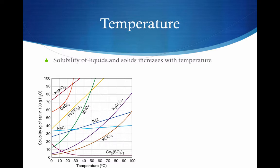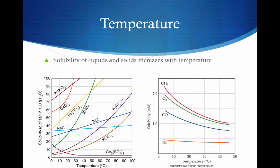Of course there are always some exceptions — you can find one on this graph: cesium sulfate at the very bottom. Here's a graph looking at gas solubility versus temperature. Notice that as the temperature increases, the solubility of these gases decreases. This is something you've probably seen before: if you leave a cup of soda out in the hot sun, it will go flat much faster than a cup left in the refrigerator, even if it's open. The increased temperature causes the CO₂ molecules to bounce around more and form gas bubbles that undissolve.